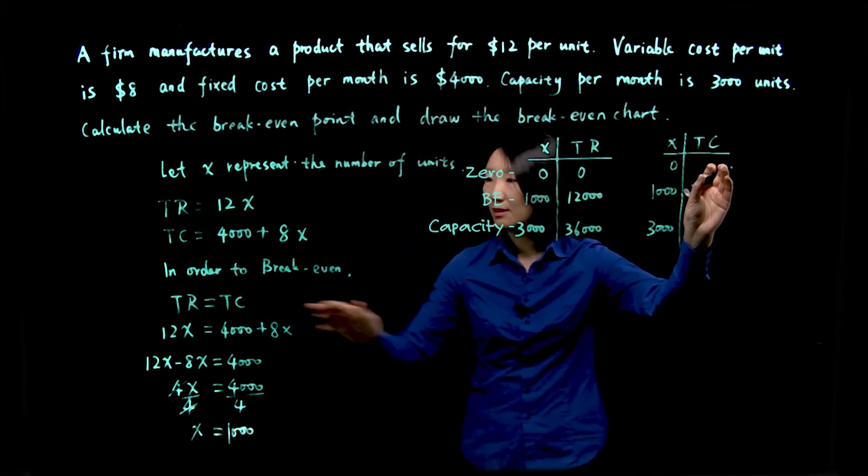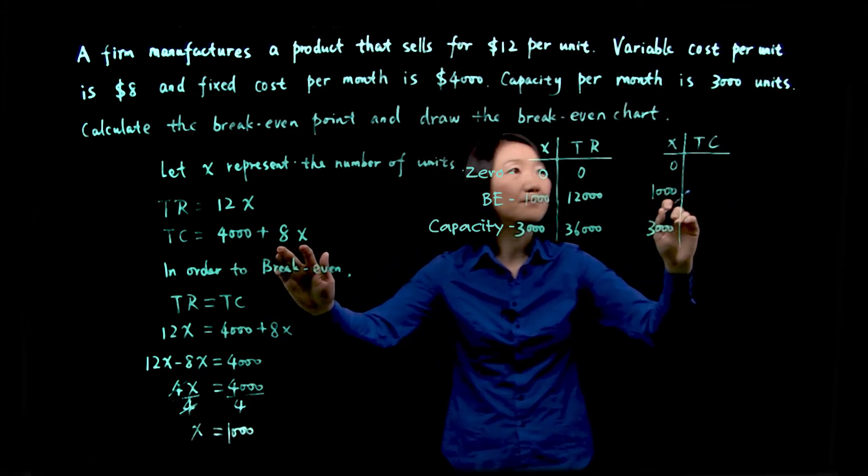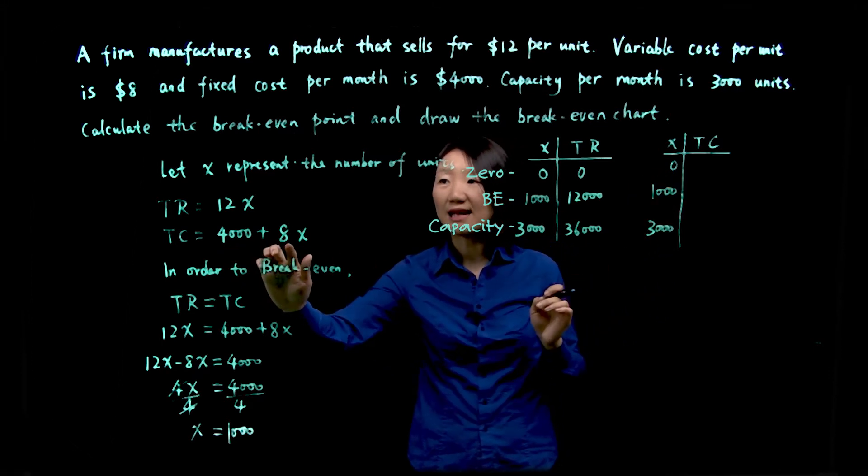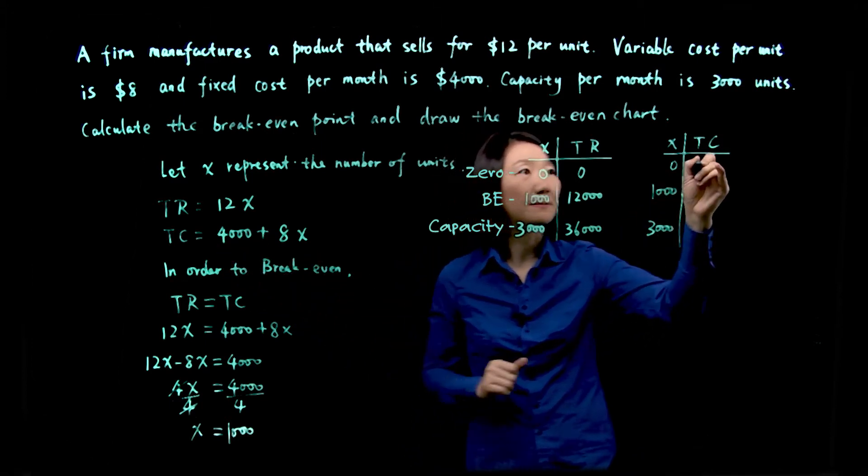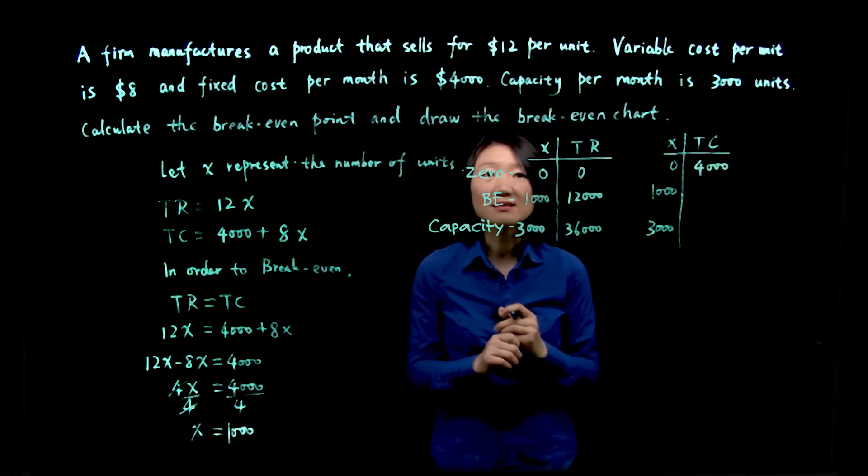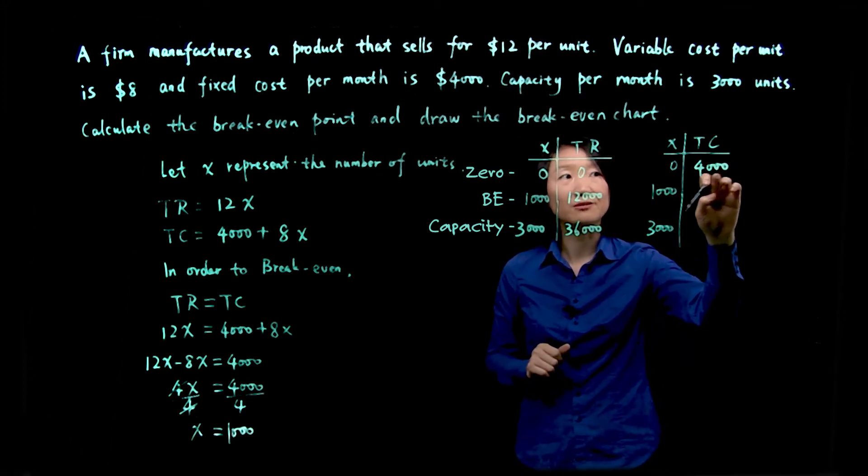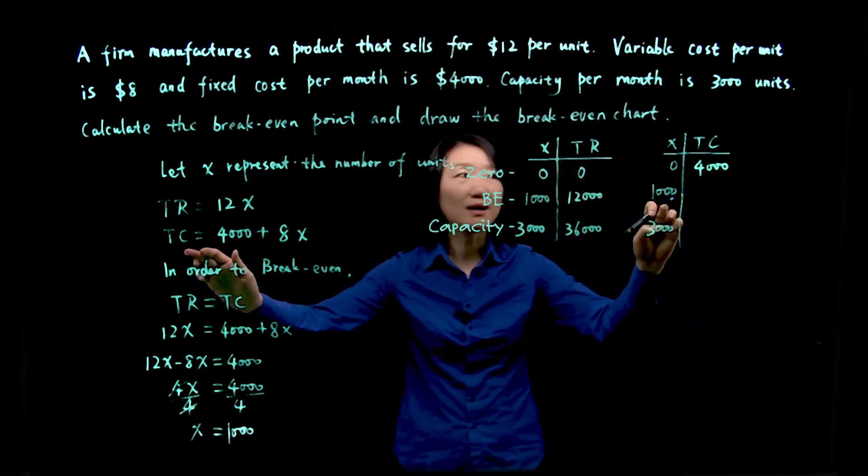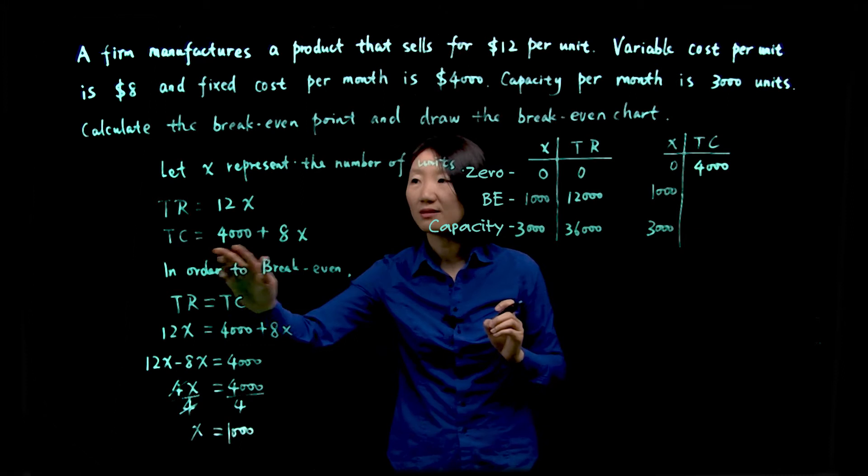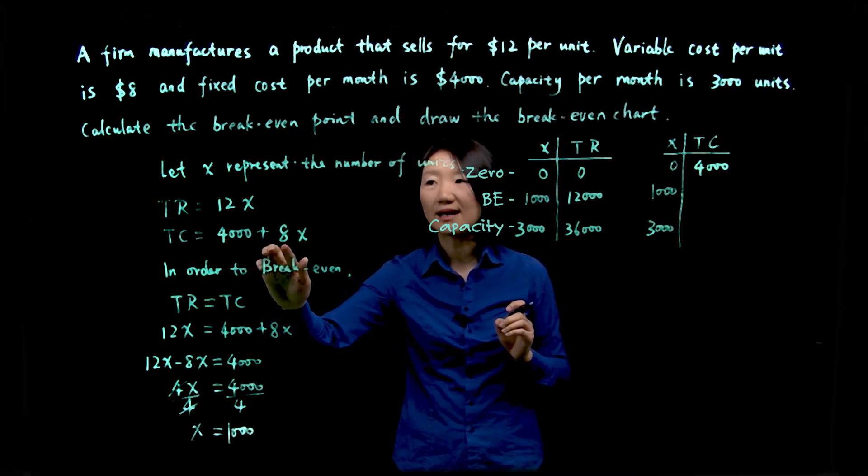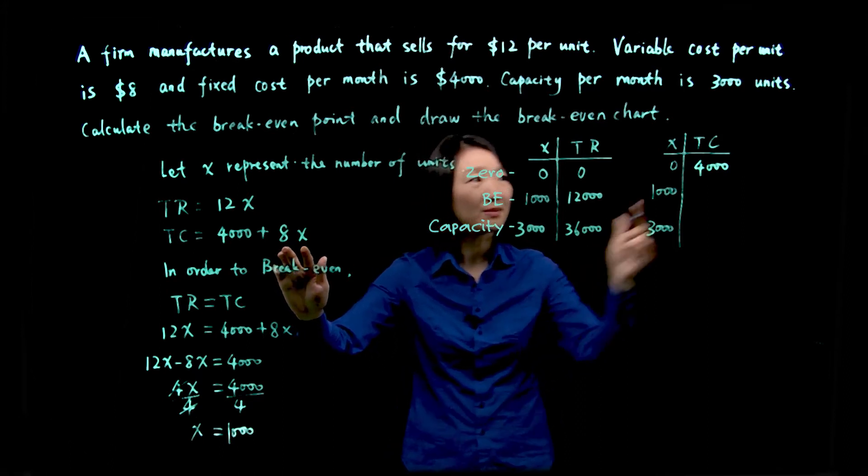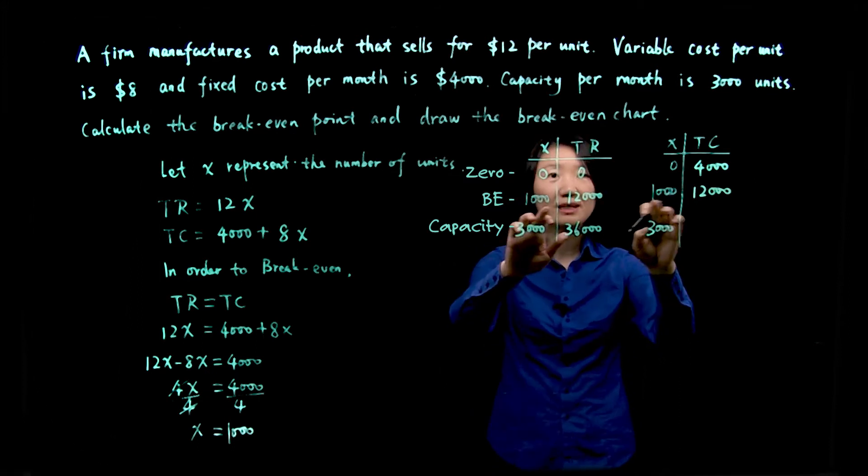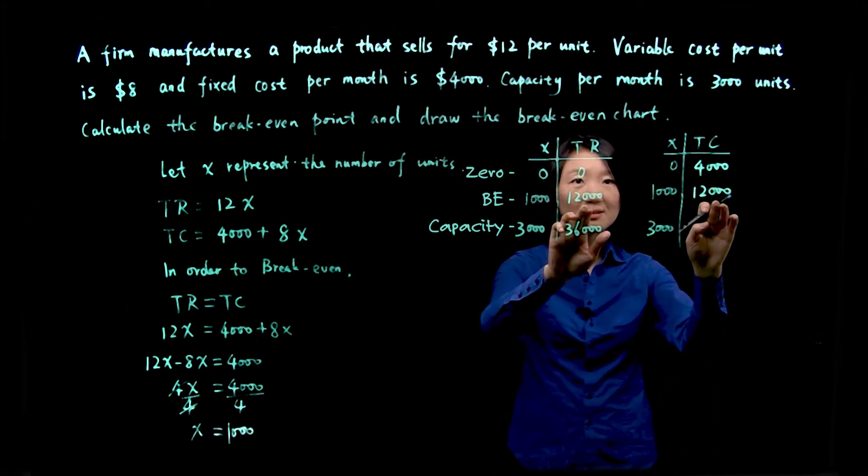Now for total cost, total cost is 4,000 plus 8x. If x is zero, you produce zero units, 4,000 plus 8 times zero, your answer is 4,000. That means even if you produce nothing, you still have to pay for the fixed cost. What about at break-even point, 1,000? Let's plug 1,000 into this total cost function. So 4,000 plus 8 times 1,000, you do the calculation, you will see 12,000. And that makes sense, because at break-even point, your total revenue and total cost are supposed to be the same.